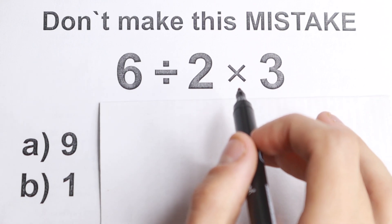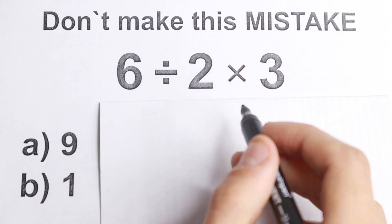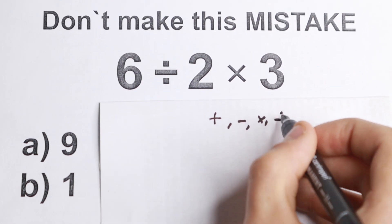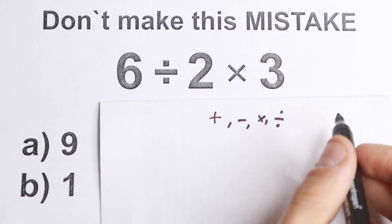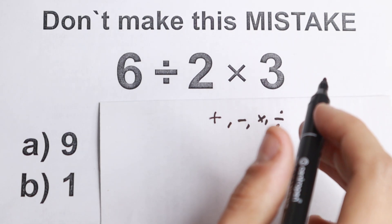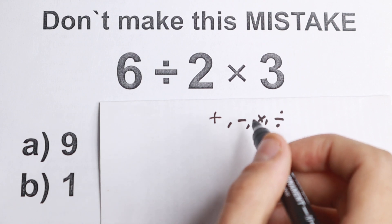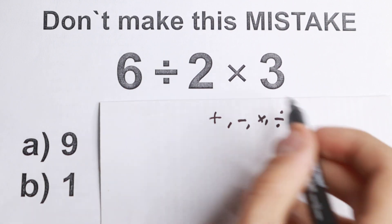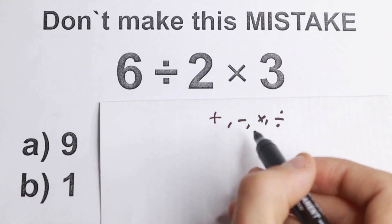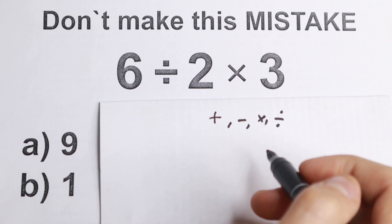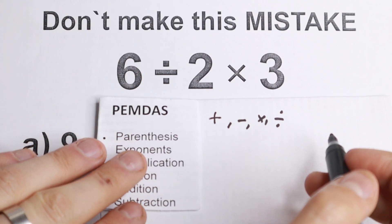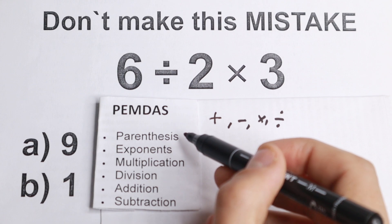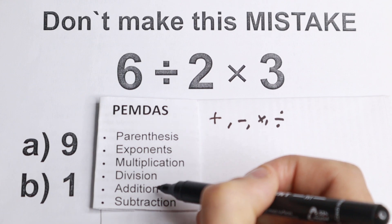We are talking about mathematical operations. A math operator includes things like addition, subtraction, multiplication, and division. Now, there's an acronym for the correct order. We use this order all over the world: Parentheses, Exponents, Multiplication, Division, Addition, and Subtraction — PEMDAS. These are the main operations we need to understand to solve this problem correctly.